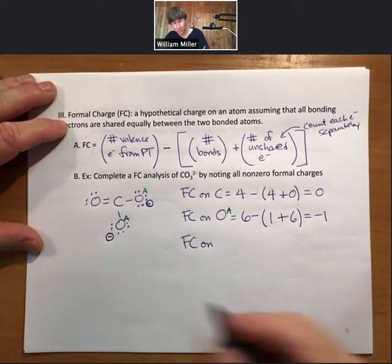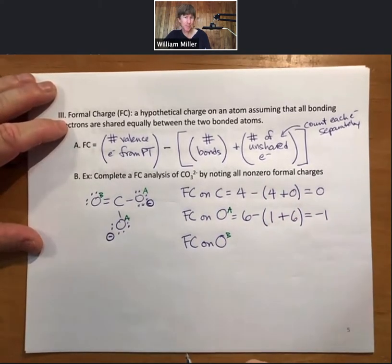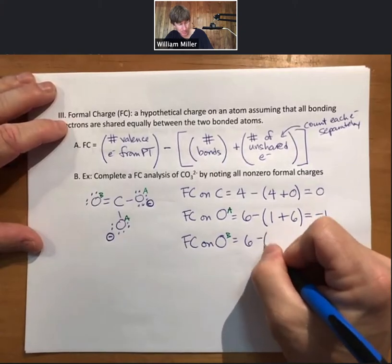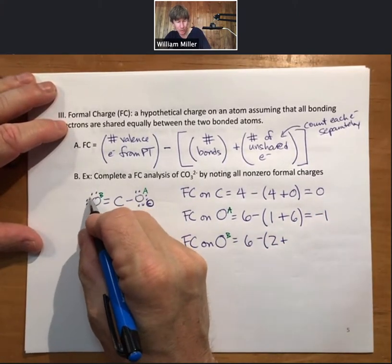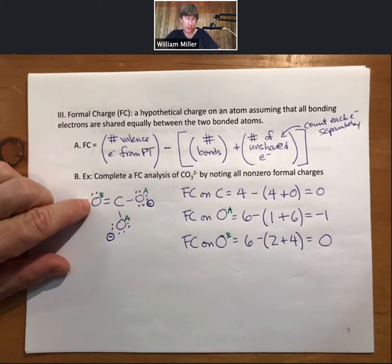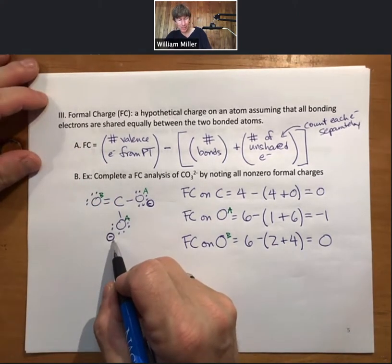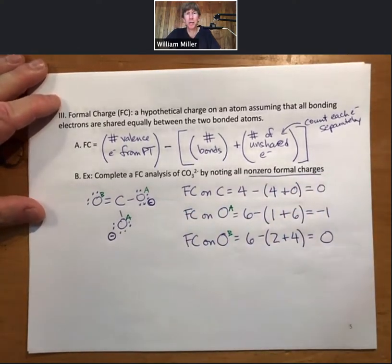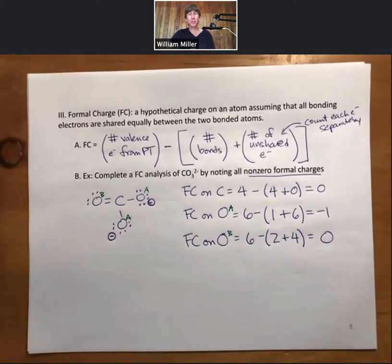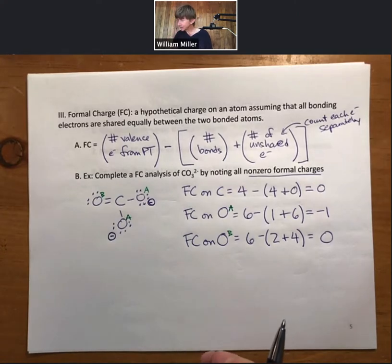Now for oxygen B — the one with the double bond — six valence electrons from the periodic table, two bonds, and four unshared electrons: six minus six equals zero, so zero formal charge. On any atom with zero formal charge, there is nothing to write. On any atom with a non-zero formal charge, you must note it. When you note formal charges you don't need the square brackets, so we won't be seeing square brackets on anything else we do.